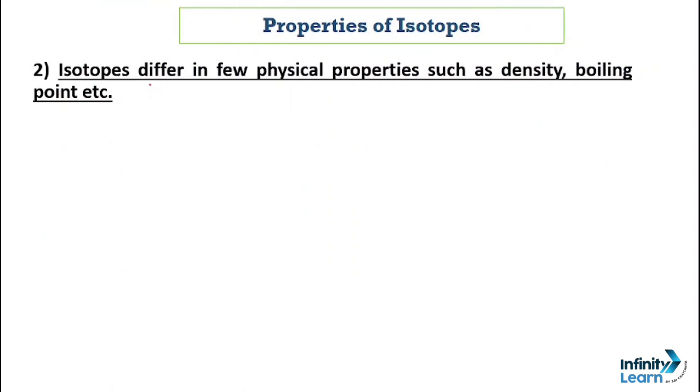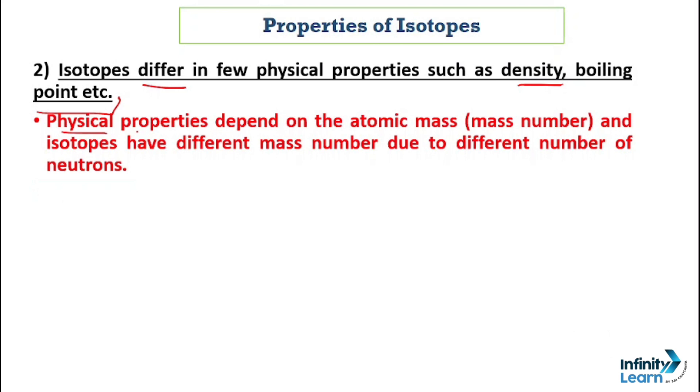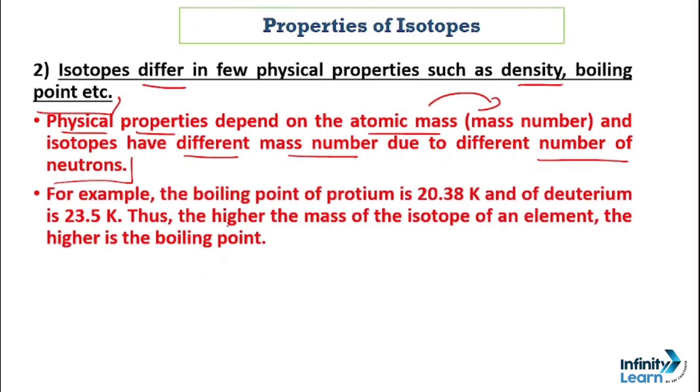Isotopes differ in a few physical properties such as density and boiling point. Physical properties depend on the atomic mass, and isotopes have different mass numbers due to different numbers of neutrons. The higher the mass of the isotope of an element, the higher the boiling point. For example, protium has 20.38 and deuterium has 23.5.